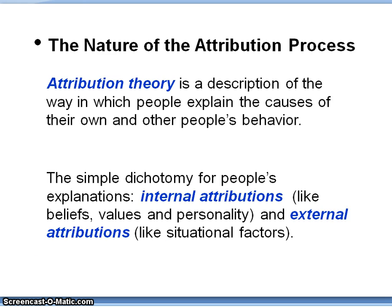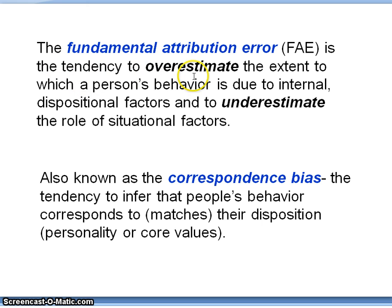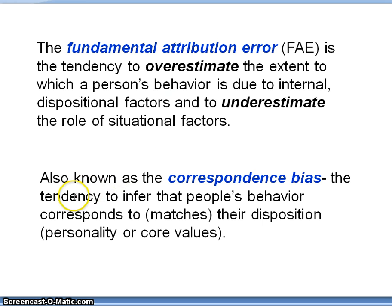The nature of the error is the following. Researchers have found a tendency to overestimate the extent to which a person's behavior is due to internal, dispositional factors, and underestimate the role of situational factors. This pattern has been found in a wide variety of studies. In the literature, you'll also see reference to the correspondence bias — another name for the fundamental attribution error — which is the tendency to infer that people's behavior corresponds to or matches their disposition, like personality, core values, etc.